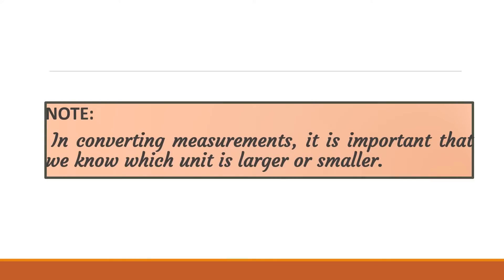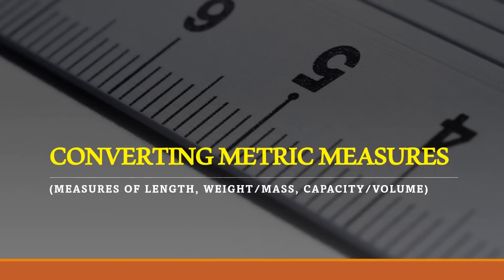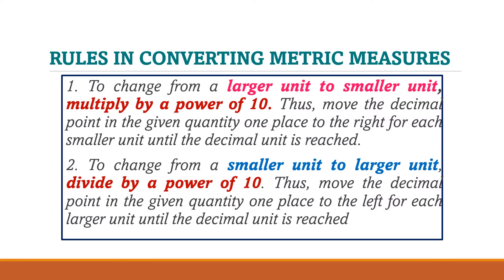Take note that in converting measurements, it is important that we know which unit is larger or smaller. Here are our rules in converting metric measures. To change from a larger unit to a smaller unit, we simply multiply by a power of 10. On the other hand, to change from a smaller unit to a larger unit, we divide by a power of 10.